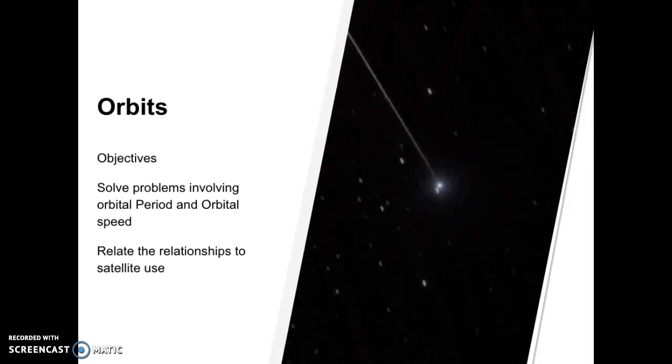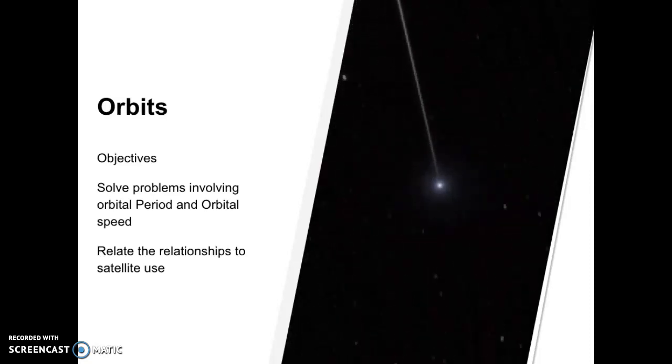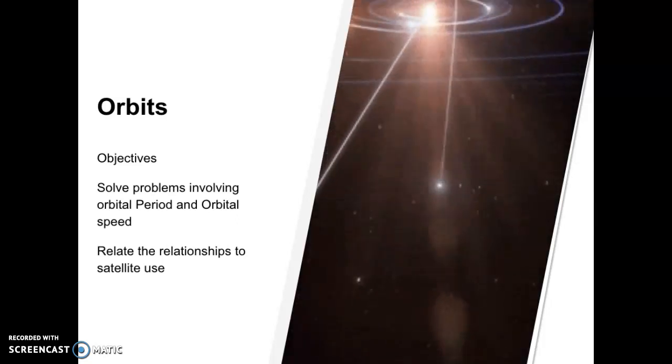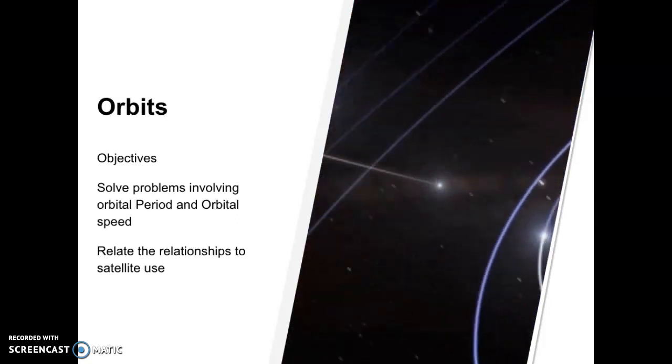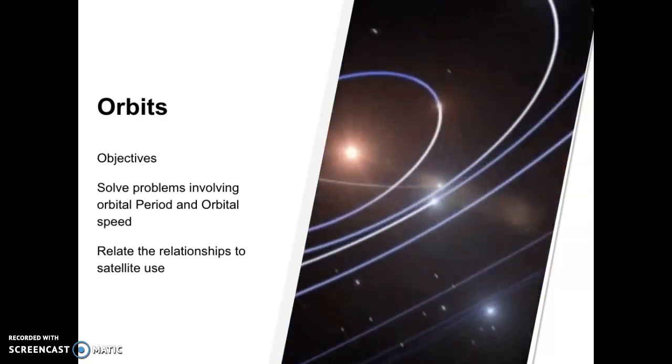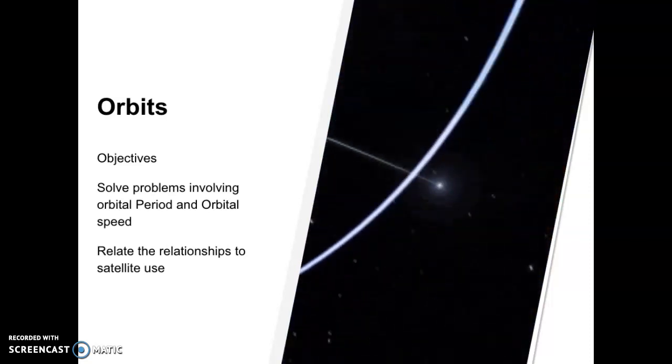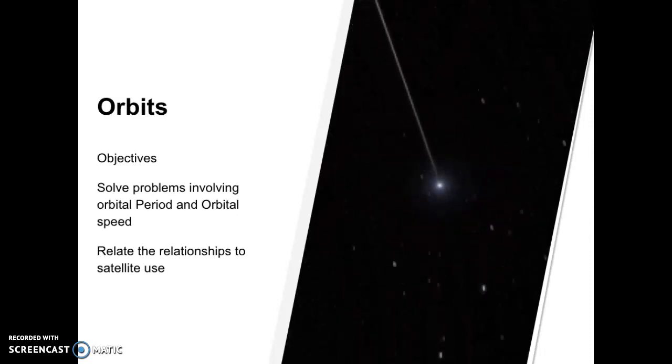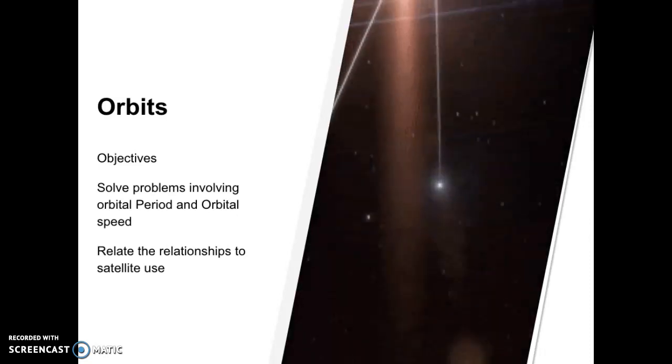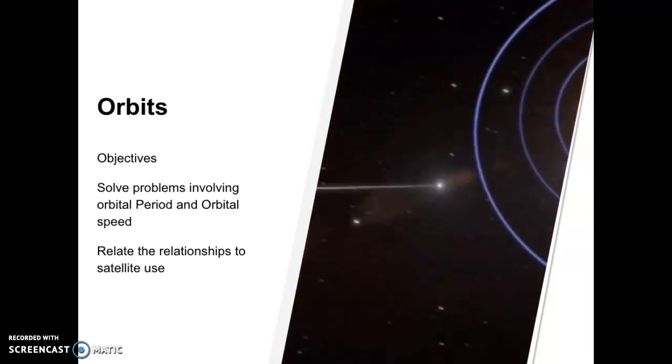So what are we doing today? We're going to apply what we've learned with gravitational field theory to orbits. Specifically, we're going to solve problems involving orbital period and orbital speed, and we'll try and relate these relationships to satellite use and what that's all about.